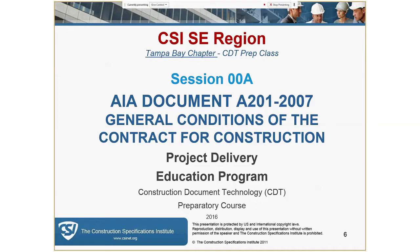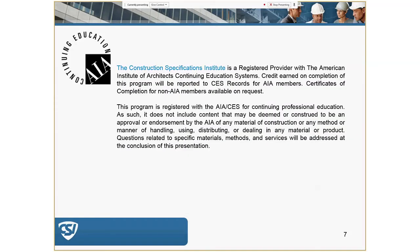Two terms to keep in mind: general conditions versus general requirements. General conditions is a Division Zero document — it talks about the general conditions of the contract for construction. General requirements are the administrative portions of the specifications, typically referred to as Division One, which we'll cover at a later date. Keep in mind that general conditions is considered the five-star general. This course is approved for AIA CEU units.